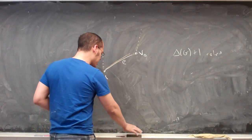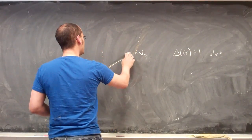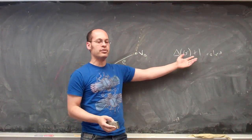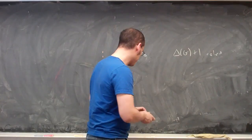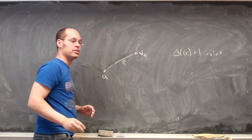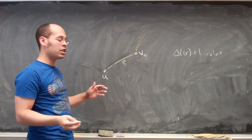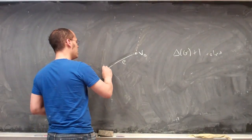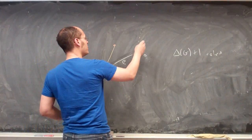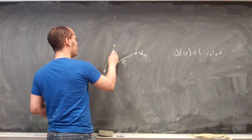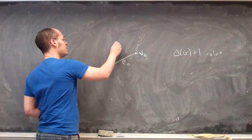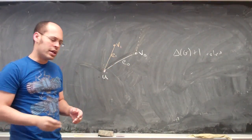Otherwise, we have to consider: what if we can't find such a colour? Well, the degree of v-naught is no more than delta of g, so there's some colour not used there — say orange. But if I haven't used orange at v-naught, then by the previous argument I must have used it at u. So there is some other edge coming off of u which has that same orange colour. We could call this edge number one, with the other vertex being v1. Now I ask: is there a colour at v1 that I haven't used, but which I also haven't used at u?